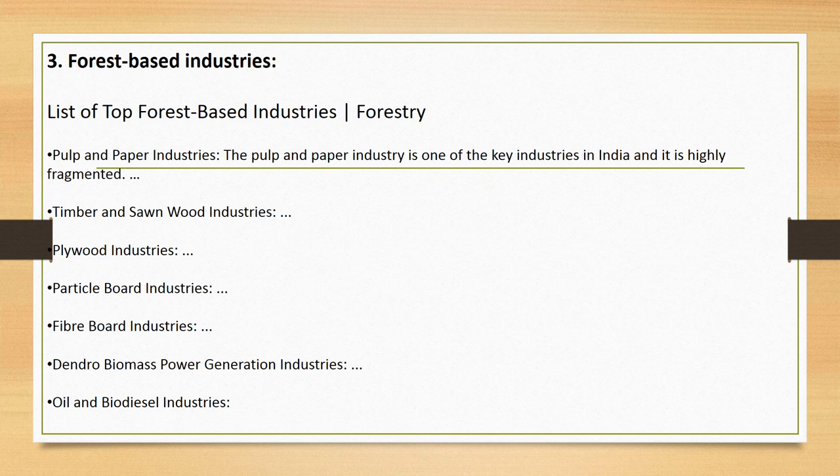The third criterion is forest-based industries. A forest product is any material derived from forestry for commercial consumption or use, such as lumber, paper, or fodder for livestock. Non-timber forest products are noted for having fewer negative effects on forest ecosystems while providing income sources for local communities. The top forest-based industries include pulp and paper industries, timber and sawn wood industry, plywood industries, particle board industries, fiber board industries, dendro-biomass power industries, and oil and biodiesel industries.